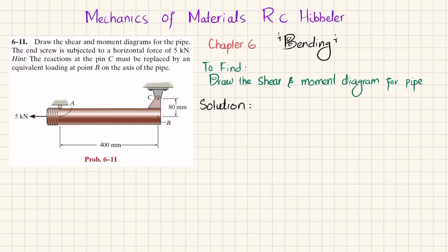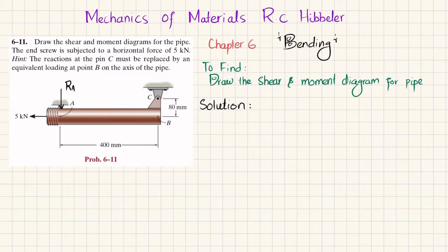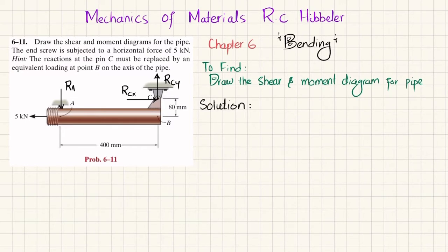Let's start with the solution. First, you can see there is a roller support which will exert a vertical force only in the downward direction — let this force be represented as R_A. At the pin support at point C, you will have a reaction force in the horizontal direction equal to R_CX, and a vertical reaction equal to R_CY.